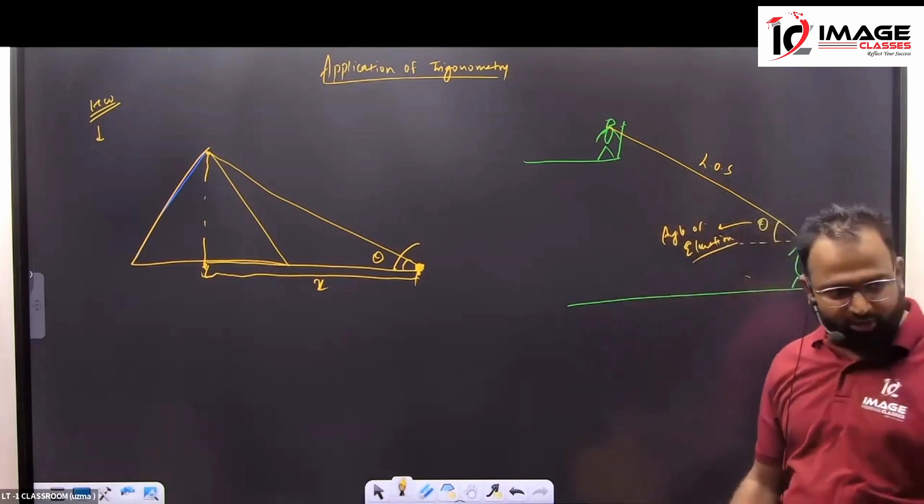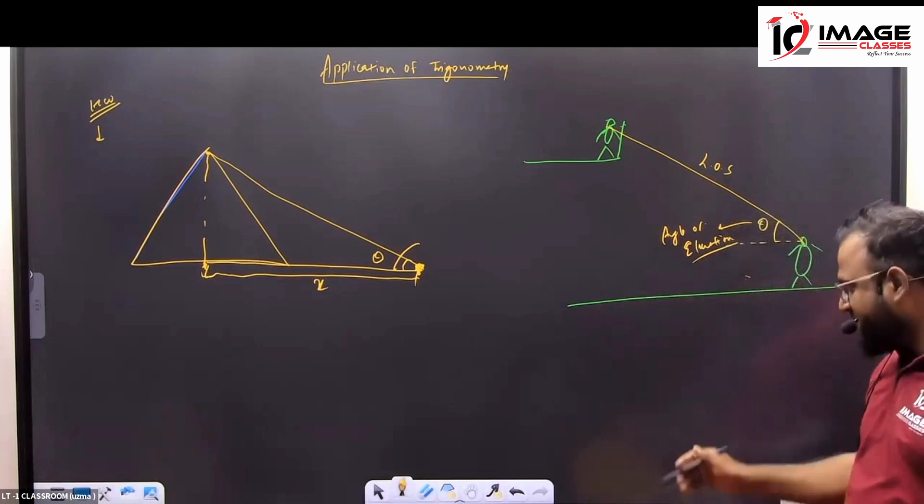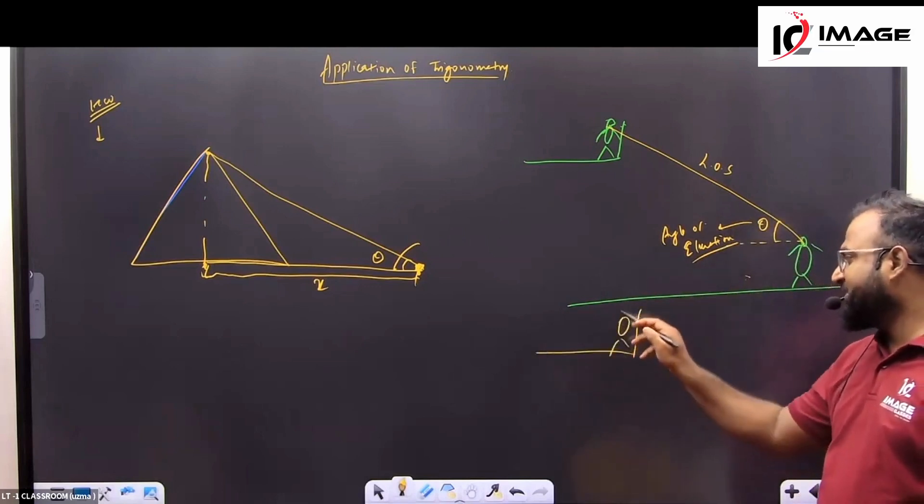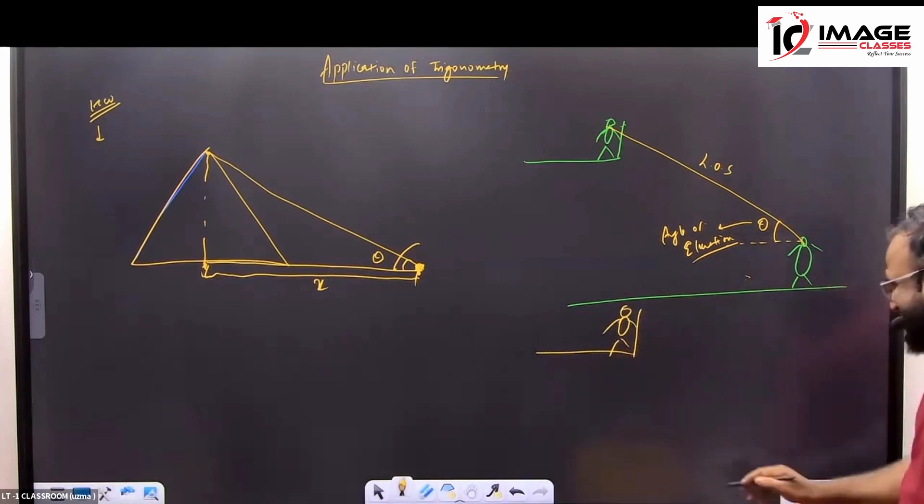One is the angle of elevation, and the other is one. Our line is smart. Aishwarya Rai has also given it to us. In the next generation, this generation is not.